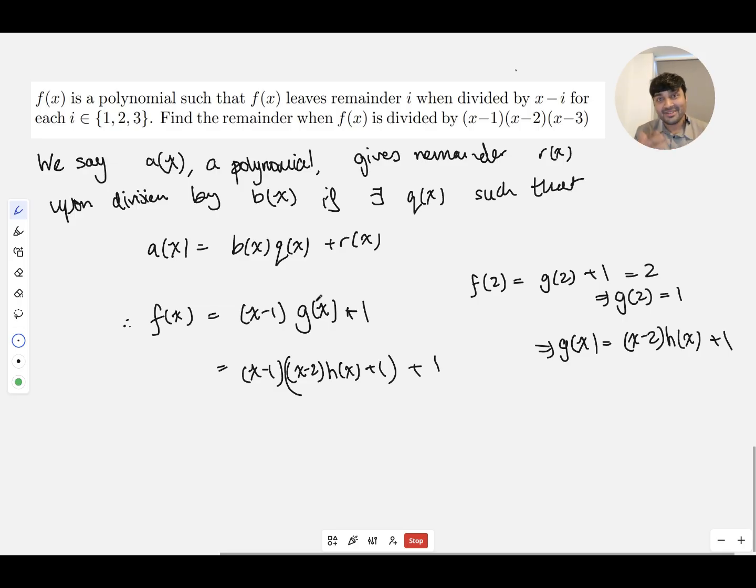Except now we've got h of x, and maybe you can guess where we're going with this. We're going to work out what h of x is by using the fact that f of 3 is 3. Again, using the remainder theorem.